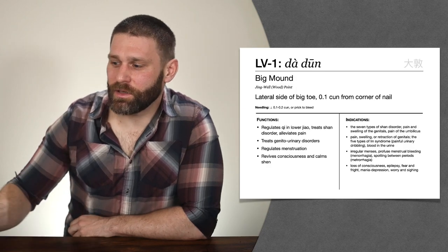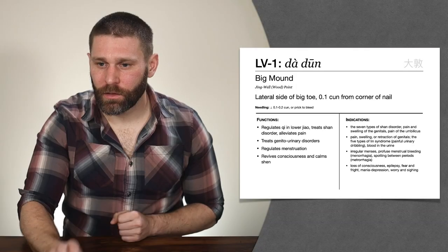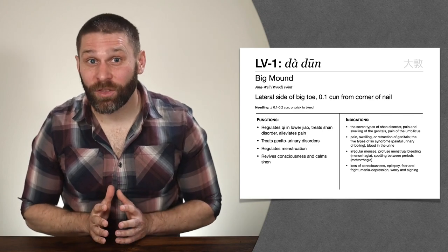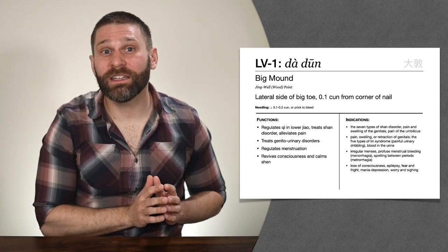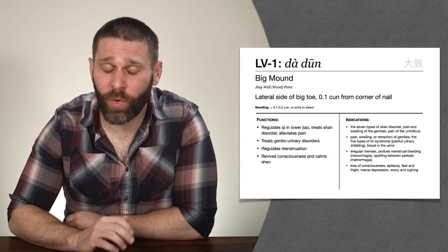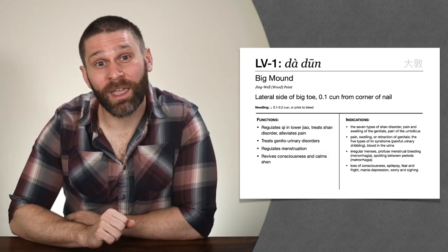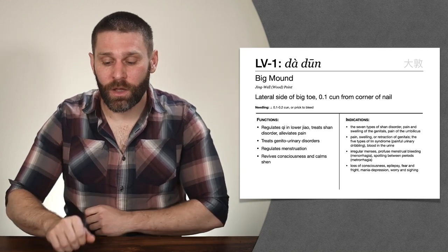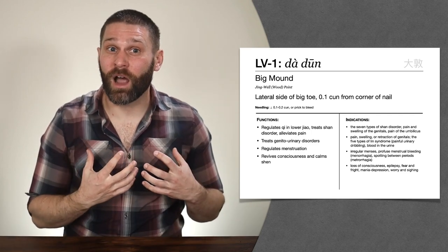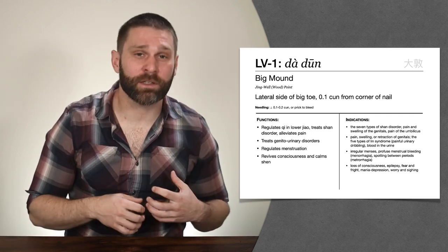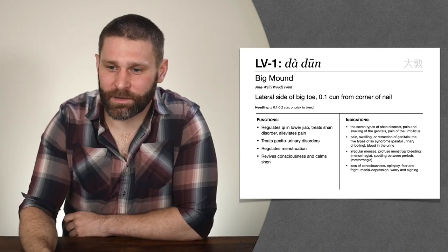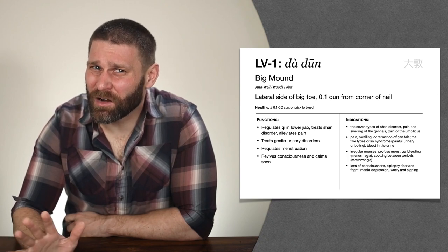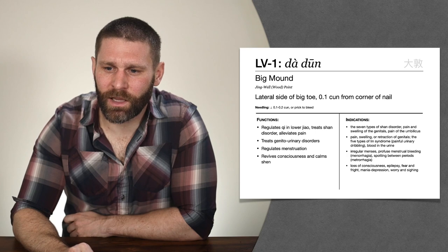Let's go ahead and get into the point functions. Now that we know the functions and characteristics of the liver, and the pathways of the liver channel, we can finally get into the functions and indications of the points. Hopefully these functions and indications will make a lot more sense now that we know those general functions and characteristics, those channel pathways, and combine it with our knowledge of the point categories. Our point categories here are a little bit unusual, so that may or may not help us.